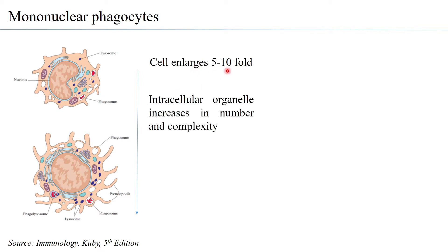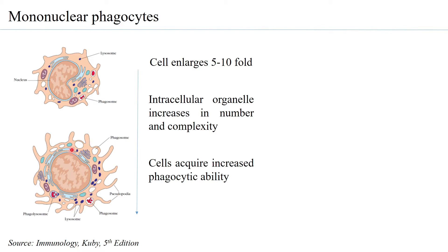The intracellular organelles also increase in number and complexity in comparison to monocytes, and the cells acquire higher phagocytic capacity. As you can see, the pseudopodia extensions are increasing so that the cells are able to engulf material and form vacuoles, which are then called phagosomes.